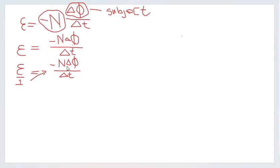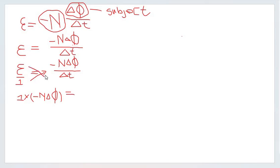On the right-hand side, rewrite the same thing: negative N multiplied by the change in magnetic flux, all divided by the change in time. From here it's very simple — you just cross-multiply. Multiply the one by negative N times the change in magnetic flux, and multiply epsilon by the change in time.